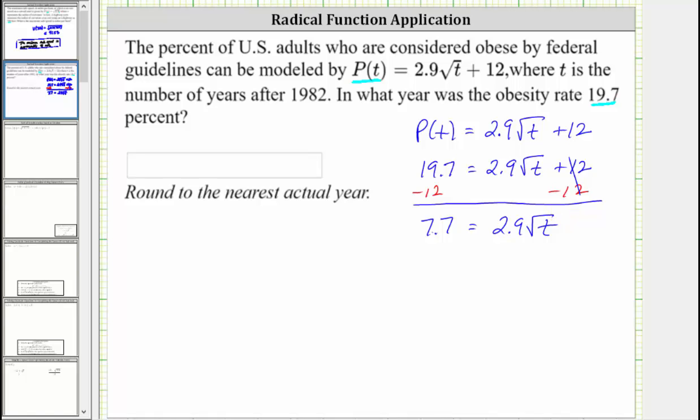The next step is to divide both sides by 2.9. Simplifying on the right side, 2.9 divided by 2.9 simplifies to one. We now just have √t on the right, and let's leave the left as its quotient: 7.7/2.9. If we find this quotient, round, and then round again later, we will have more of an error. So let's leave it in this form here.